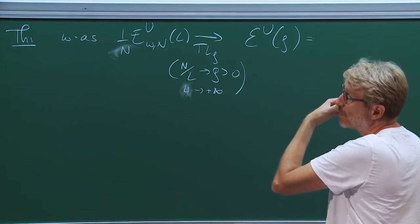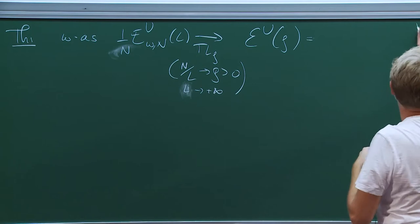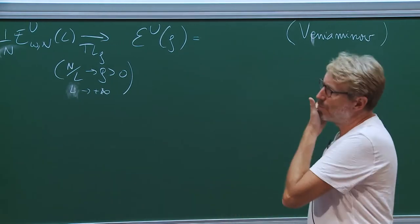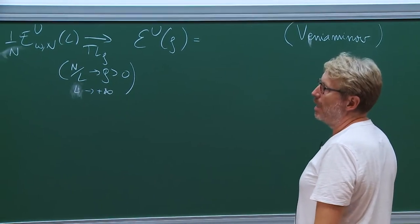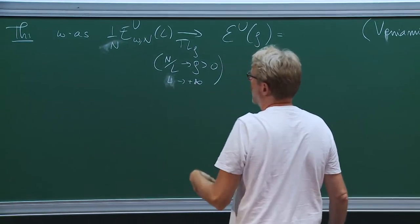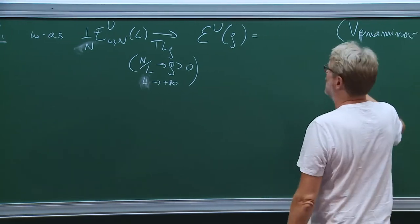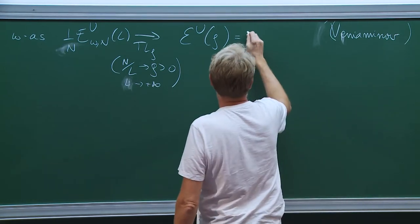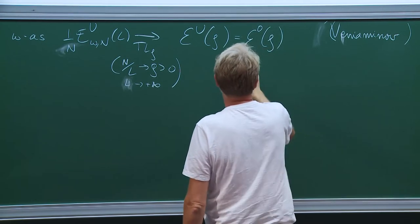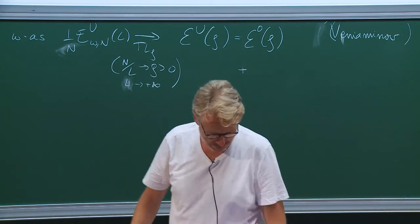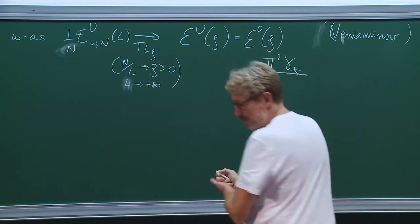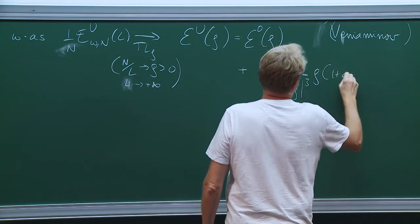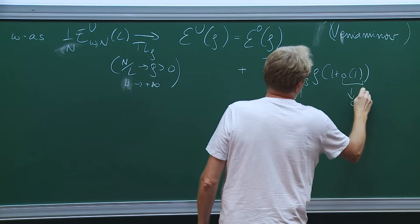This can be done in a much more general framework. It was done in Veniaminov's PhD thesis, about three or four years ago. He proved such convergence results for rather large classes of models of this type. And this had an expansion which was E_0(rho) — so this is for zero potential — plus a remainder term: pi squared gamma star, log rho cubed times rho, times one plus little-o of one. This little-o of one goes to zero when rho goes to zero.